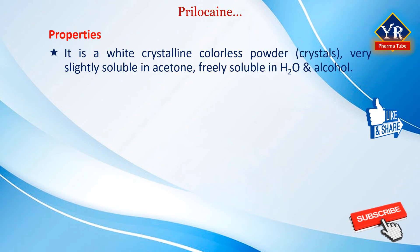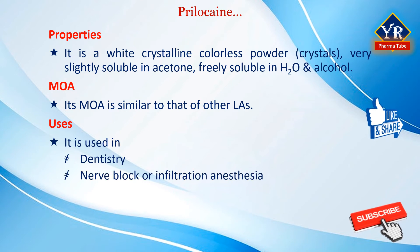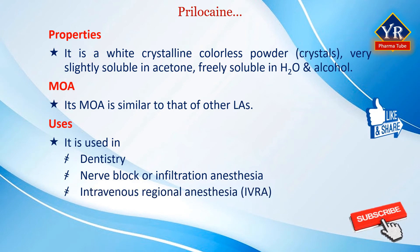Prilocaine is a white crystalline powder or colorless crystals, very slightly soluble in acetone, freely soluble in water and alcohol. Its mechanism of action is similar to that of other local anesthetics. Prilocaine is often used in dentistry for nerve block or infiltration anesthesia in dental preparations. It is also combined with lidocaine as a topical preparation for dental anesthesia, dermal anesthesia, and for the treatment of conditions like paresthesia. It is commonly employed for intravenous regional anesthesia (IVRA) as the risk of CNS toxicity is low due to its quick metabolism.